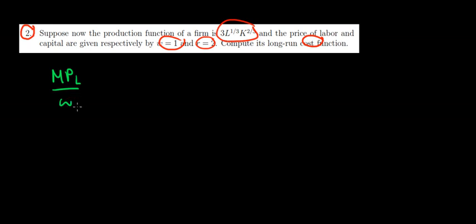What do we know about the long run? In the long run, the firm is going to optimize the values of labor and capital such that at the margin, for the last unit, the product they get from labor is the same as the product they get from capital. In other words, our equilibrium condition is that the marginal product of labor relative to the wage equals the marginal product of capital relative to the interest.